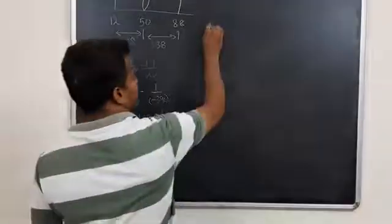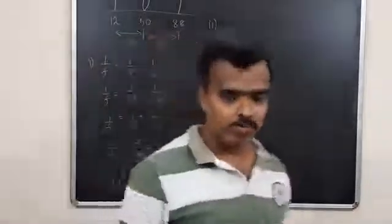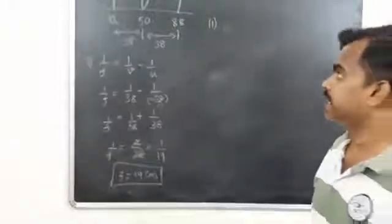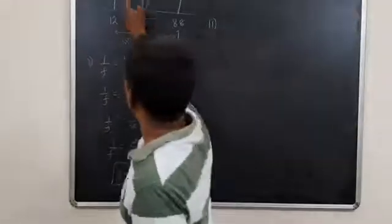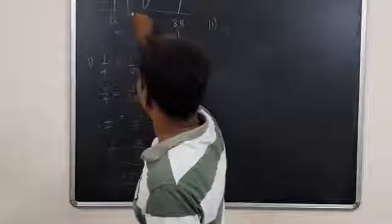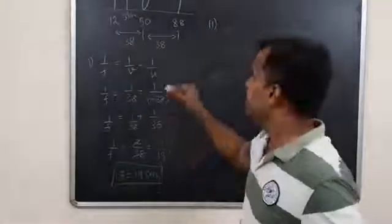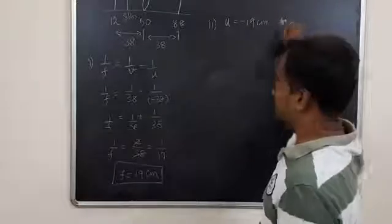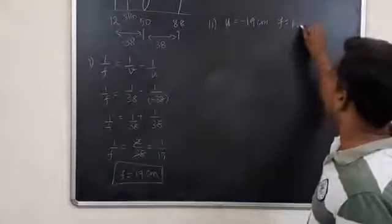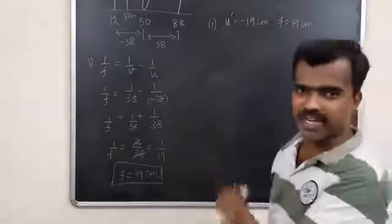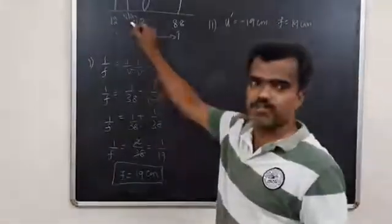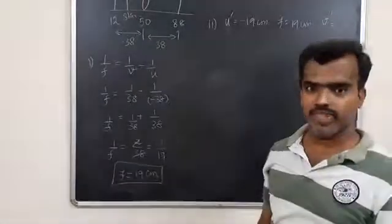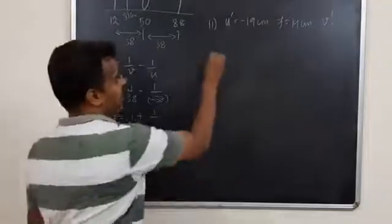And for subquestion two, they are asking if the object is shifted at 31cm. So now we are moving the object to 31cm. What is the U value? Minus 19cm. We have found F equals 19cm. We can put U dash because we changed from 12cm to 31cm. We have to find out new image distance V dash, and we use the lens formula.